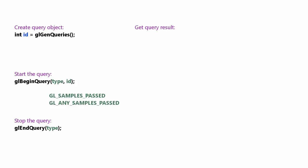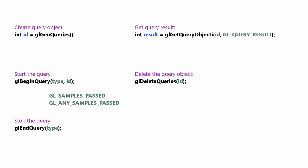To get the result of the query, we call glGetQueryObjecti, which takes in the ID of the query object and the name of what we're trying to access — which will be GL_QUERY_RESULT. That returns the result as an int. Finally, to delete the query object when the application closes, we call glDeleteQueries, passing in the ID of the query.